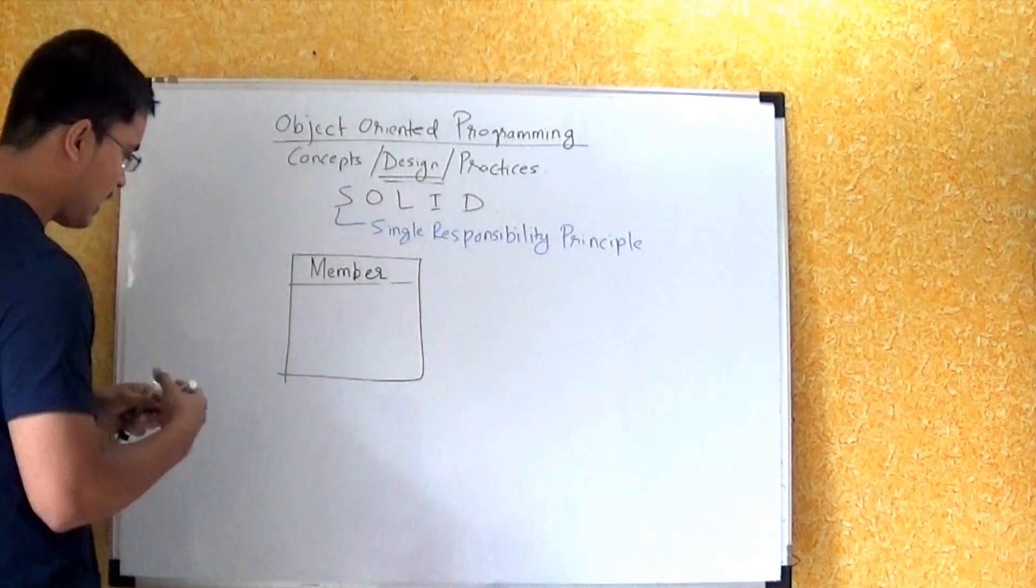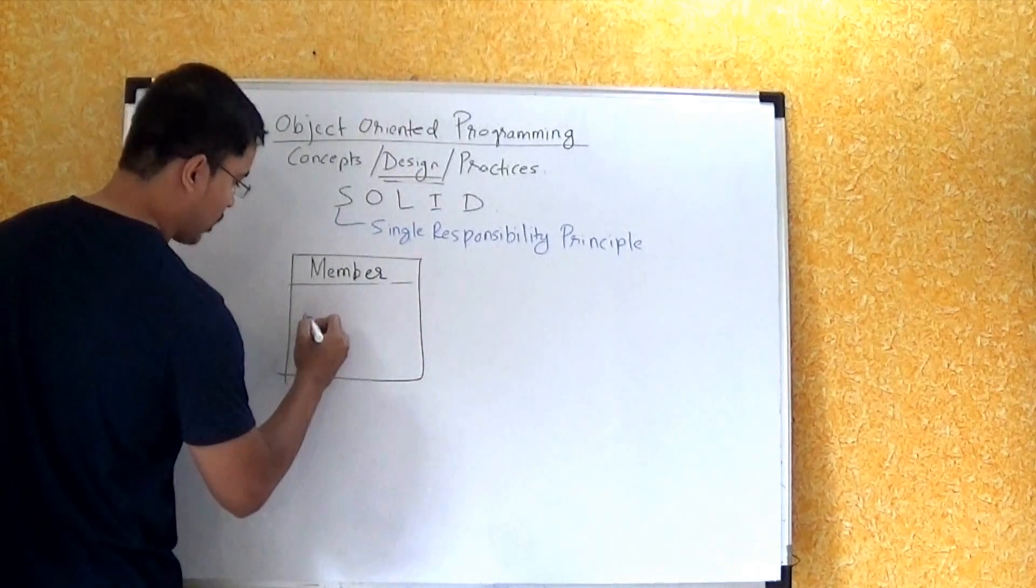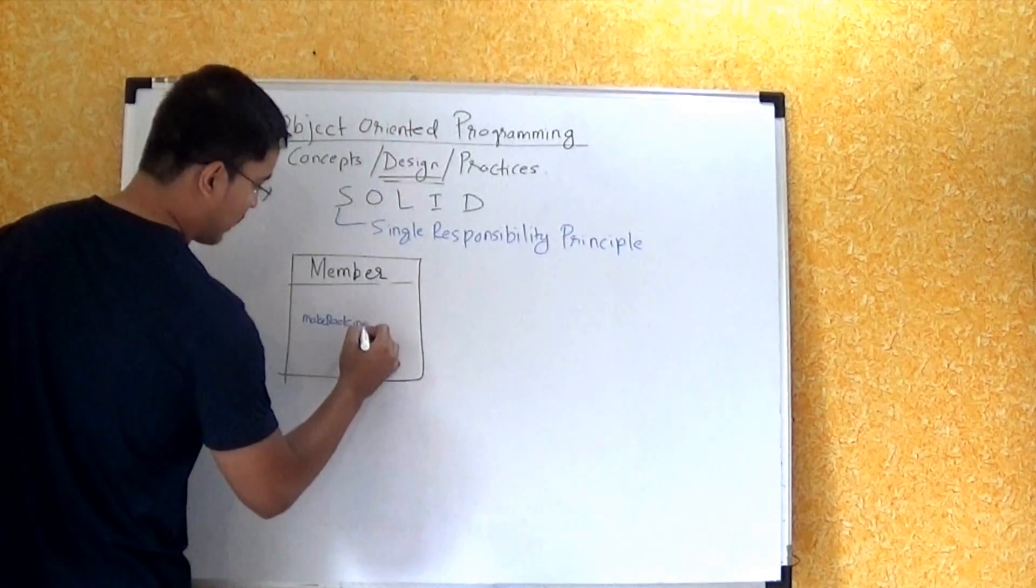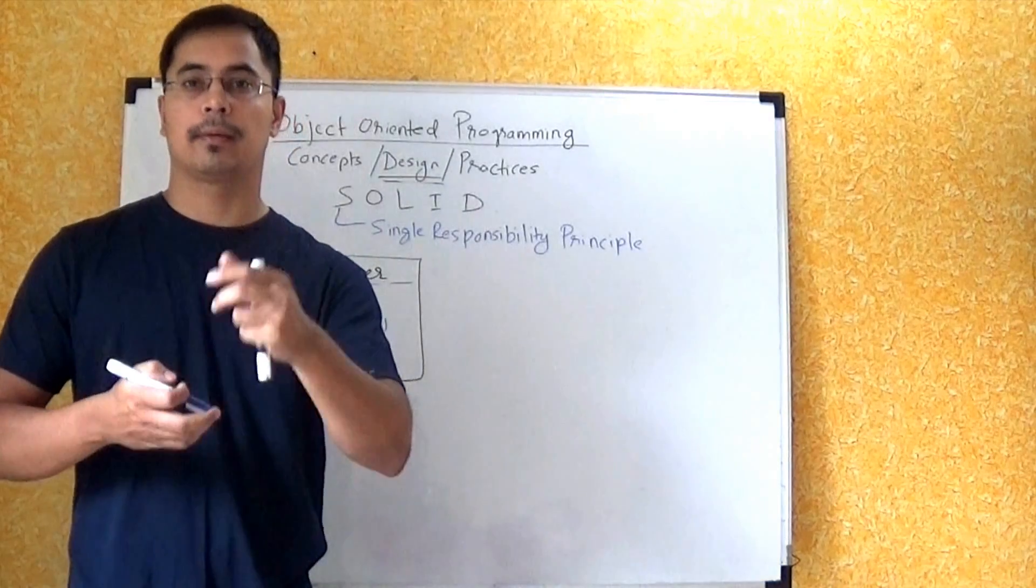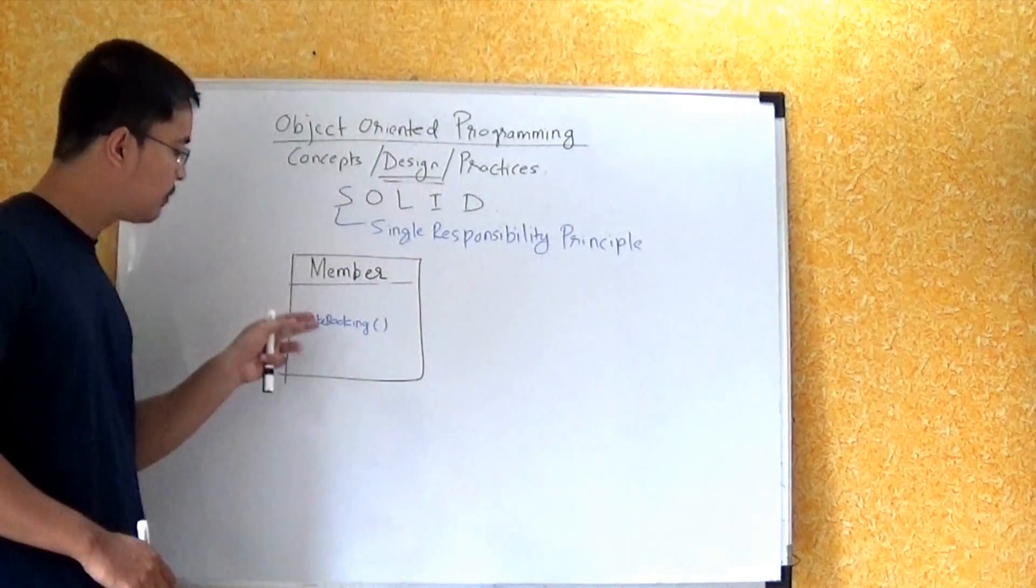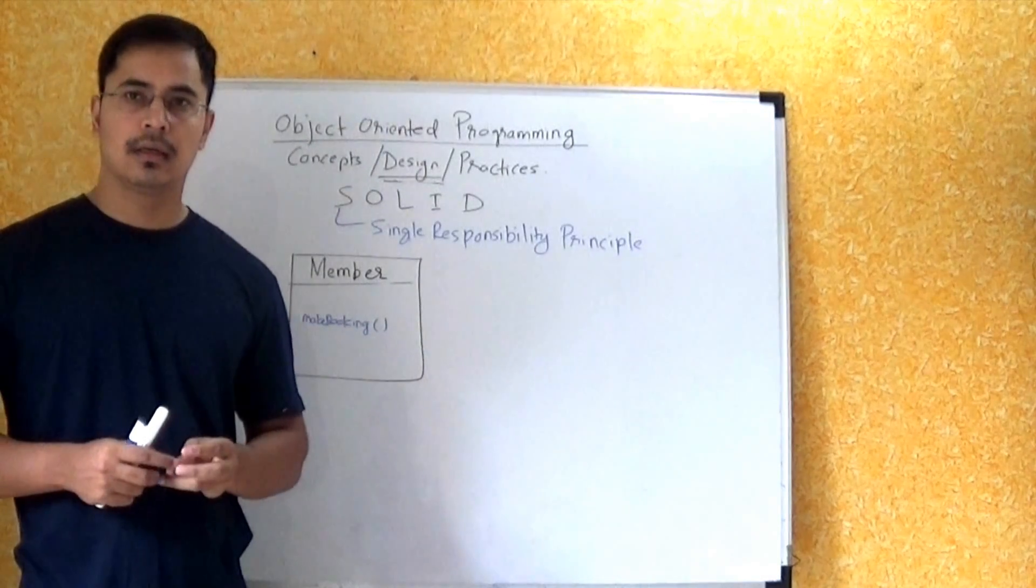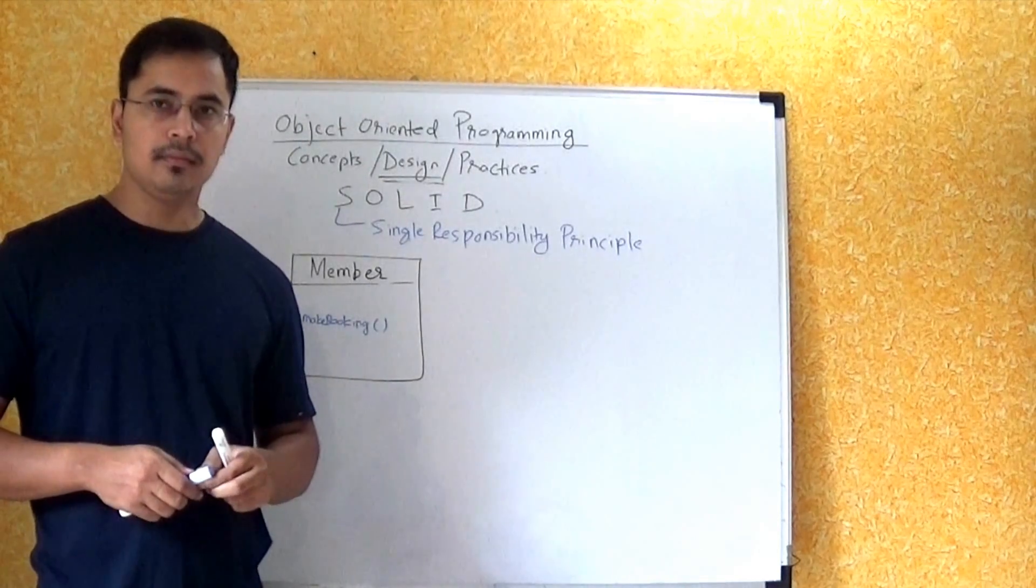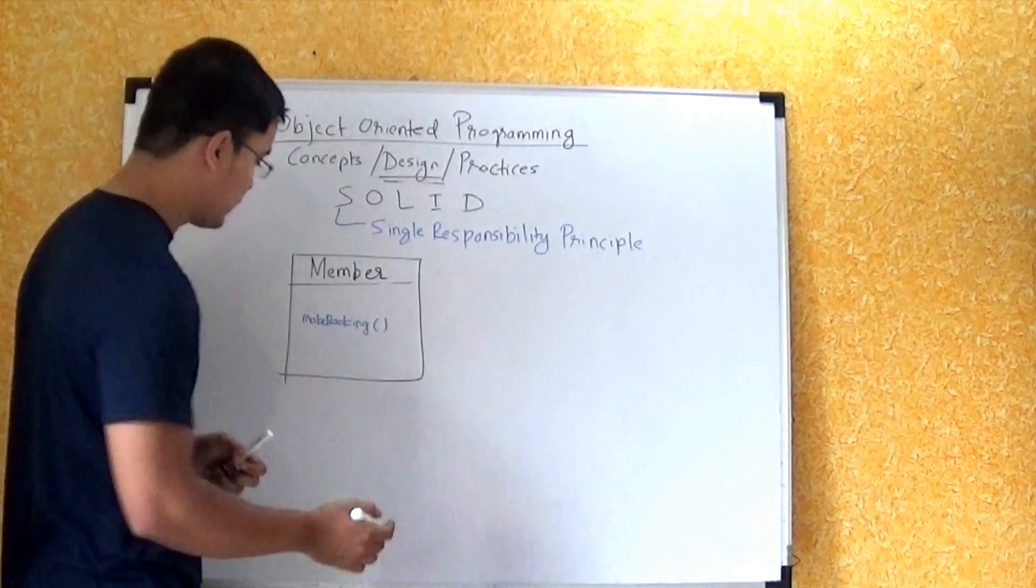Shall I put a code called MakeBooking? Should I put a code like that in this member class? What do you think? No. Why should we not put this here? Because you told that the class should care about the single responsibility and it is not related with the member. Members should have only the CRUD operations from my point of view.